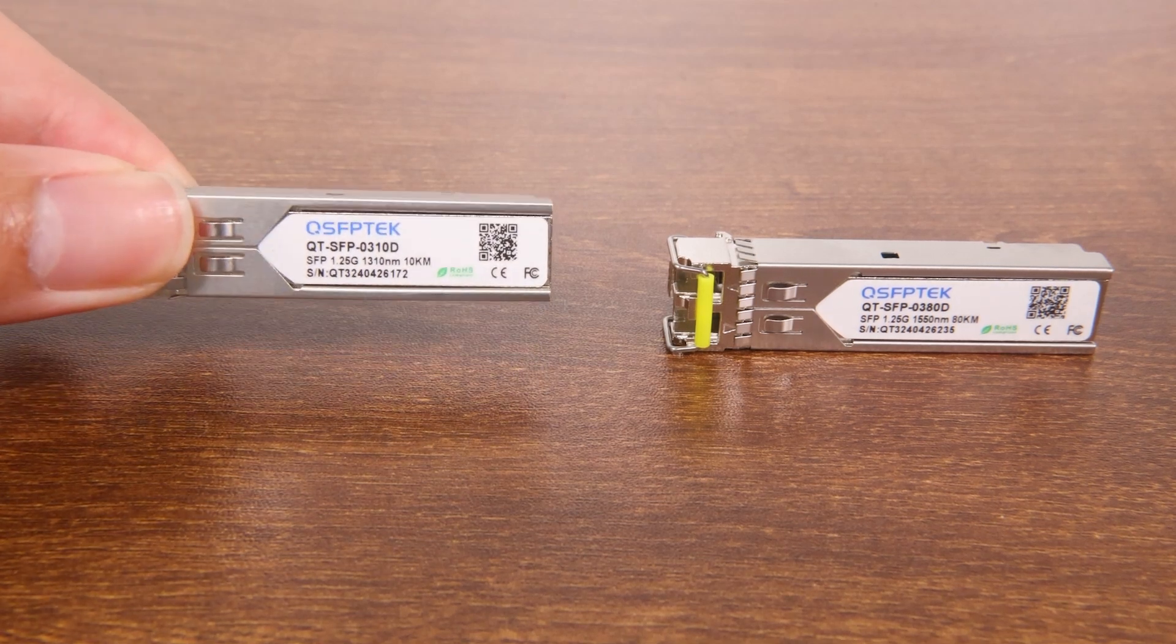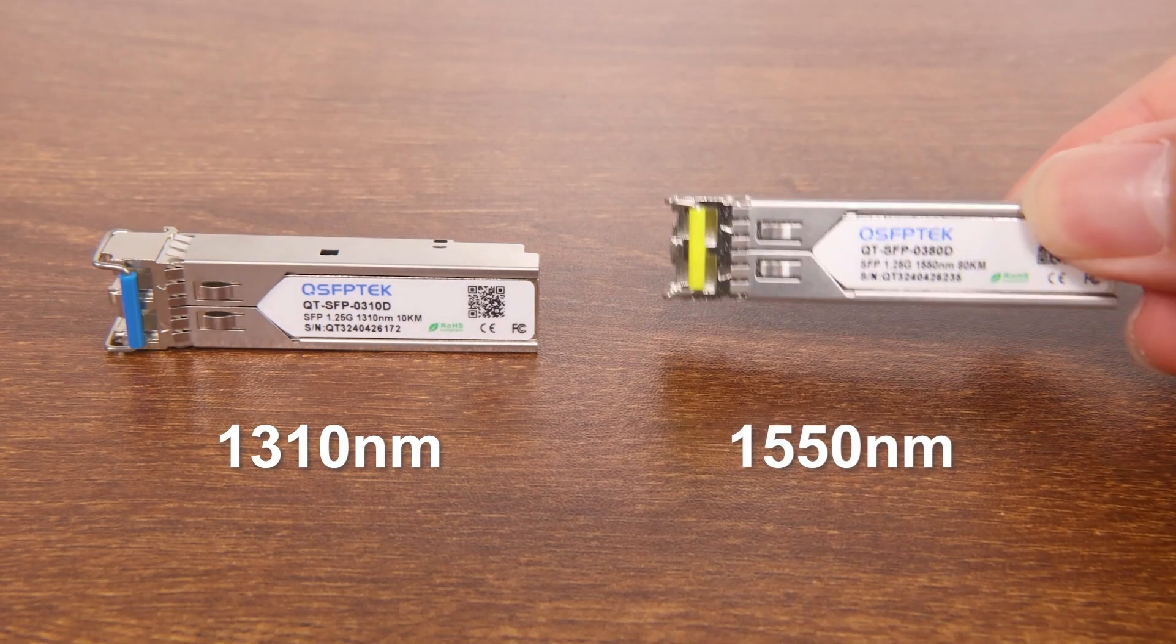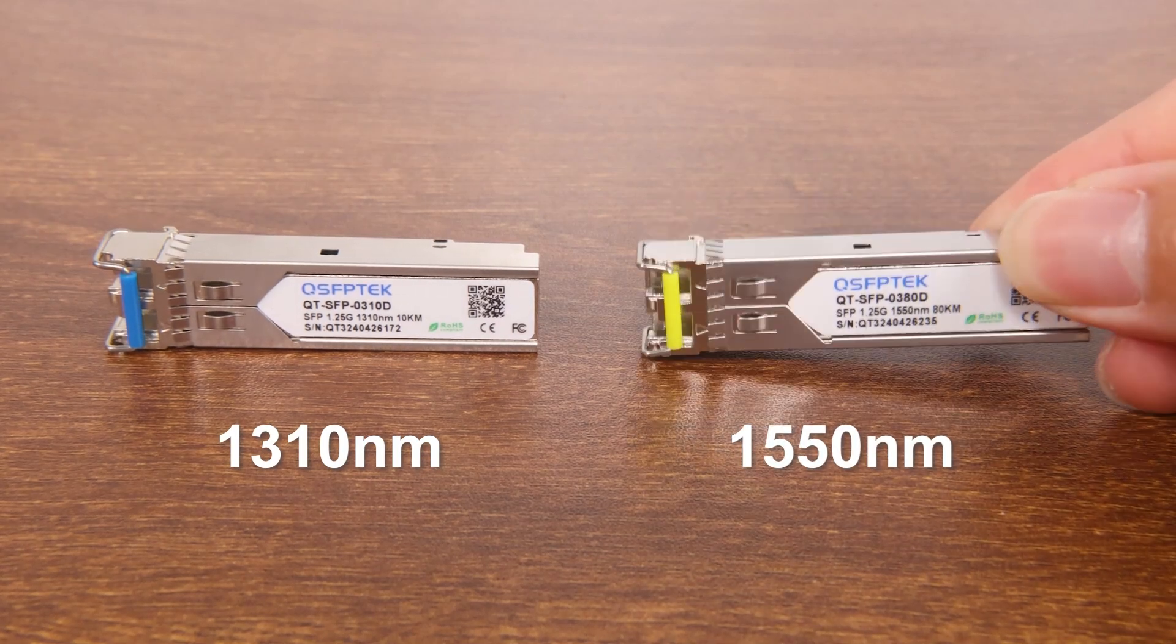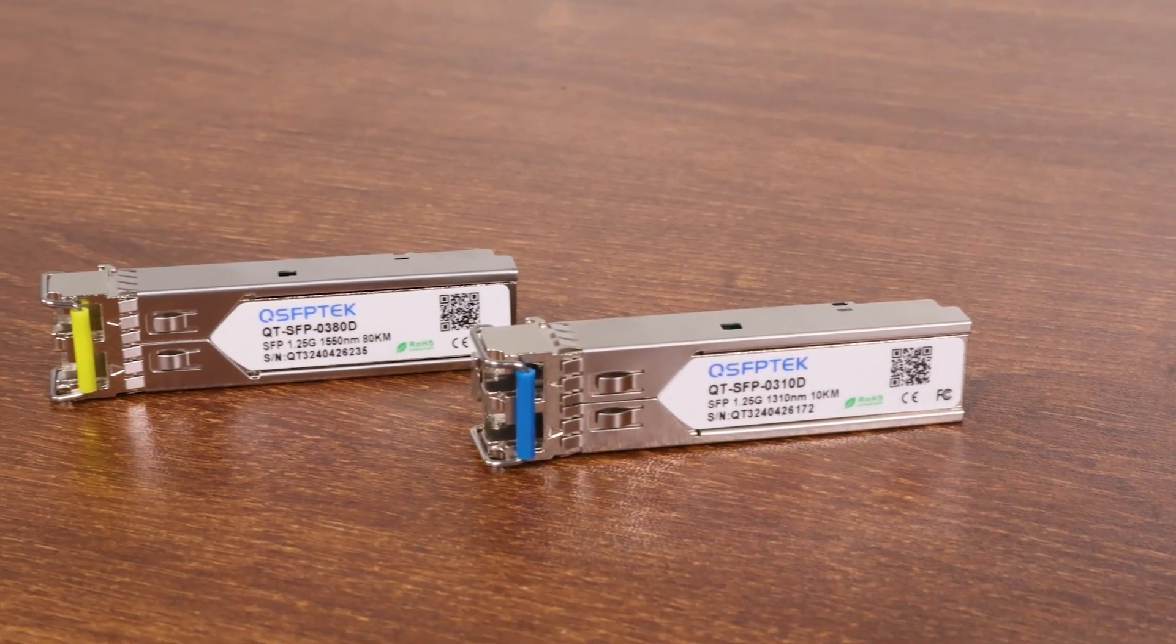When using optical modules, you may notice labels like 1310 nanometer and 1550 nanometers. What do they mean? They actually refer to the wavelength of the optical module, so what are the differences between them?